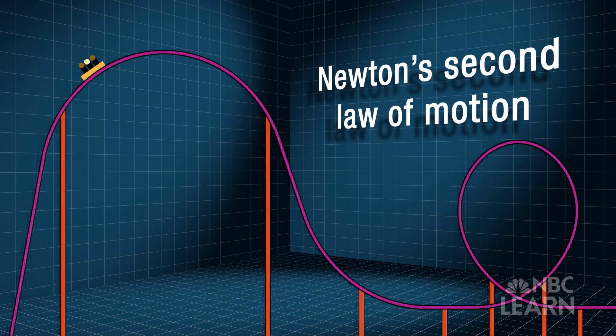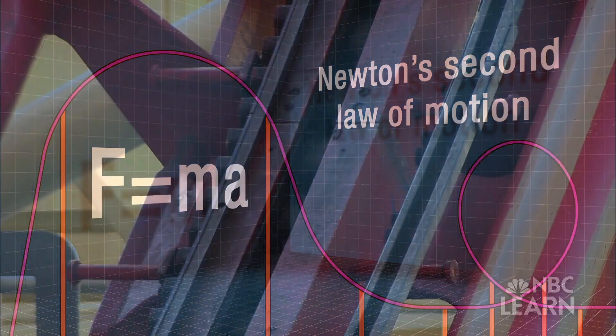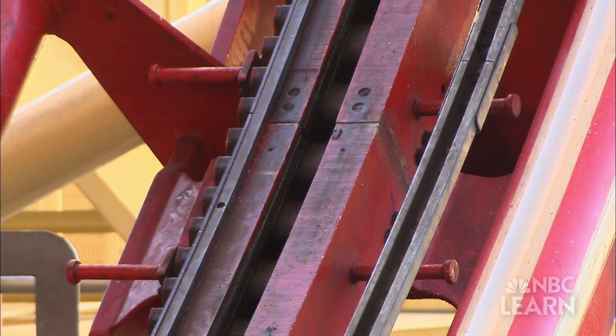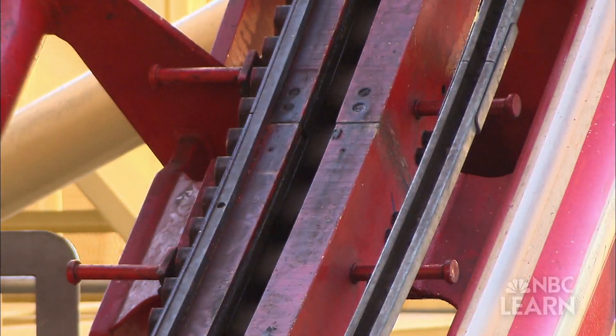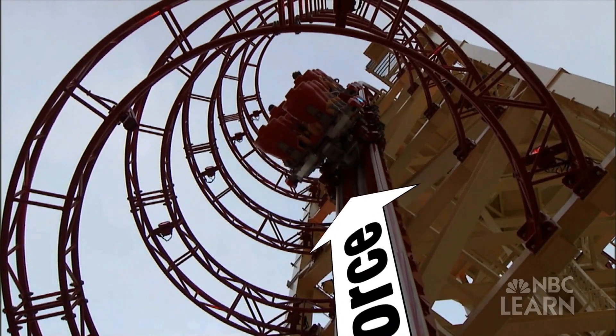Newton's second law of motion is force equals mass times acceleration. On a roller coaster, when we bring that vehicle to the top of the hill with a chain, we're actually accelerating that vehicle. And there are forces attached to that chain when we accelerate the vehicle up to the top of the hill.